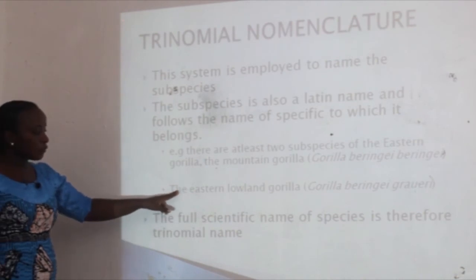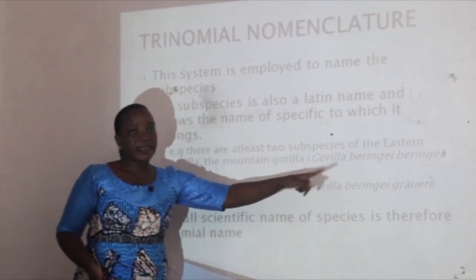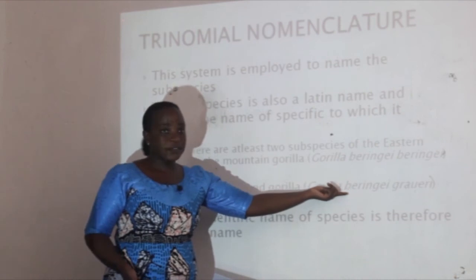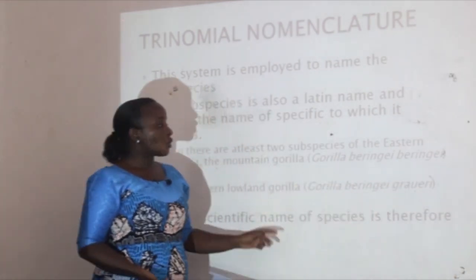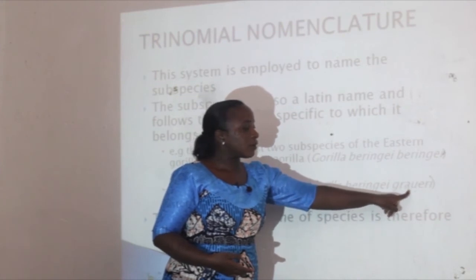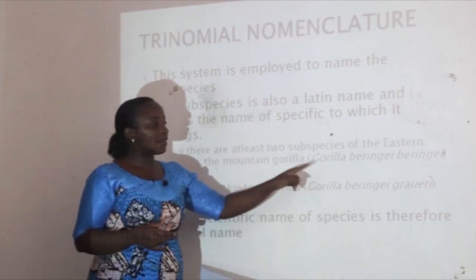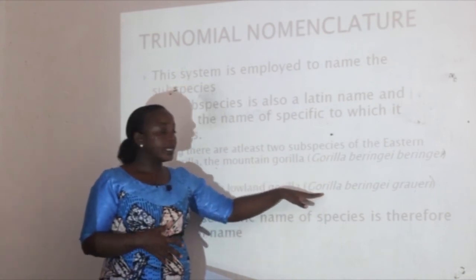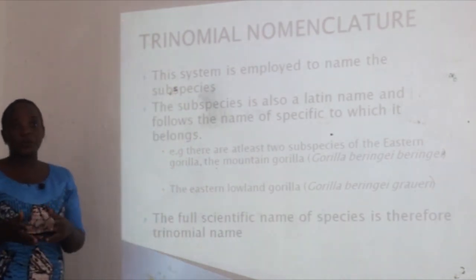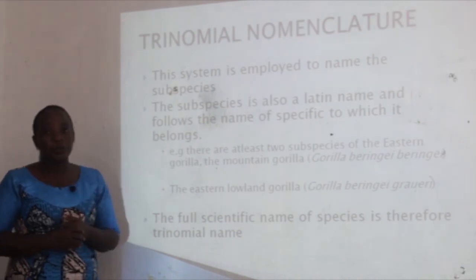The Eastern Gorilla that lives on the lowland is called Gorilla beringei graueri. The first name 'Gorilla' is generic, the second 'beringei' is specific, and the third 'graueri' is subspecific. The subspecific names 'beringei' and 'graueri' are employed to differentiate the two: one on the mountain is Gorilla beringei beringei, and one on the lowland is Gorilla beringei graueri. Therefore, the full scientific name of the subspecies is trinomial — meaning three names.